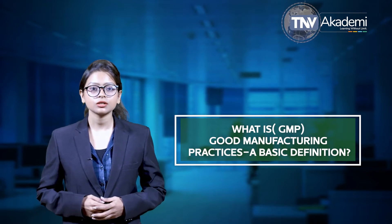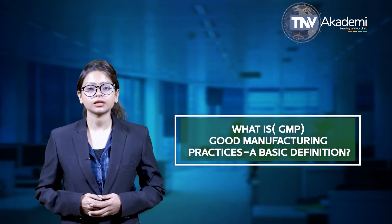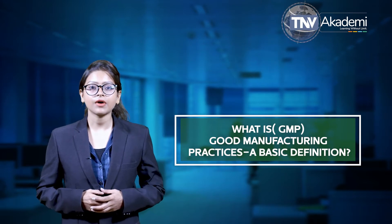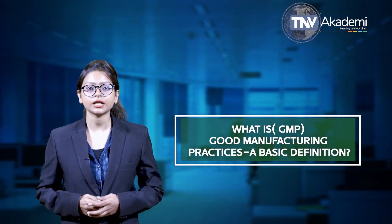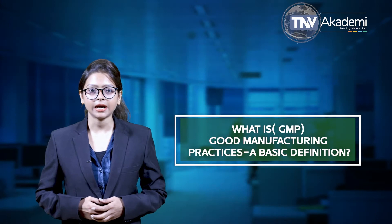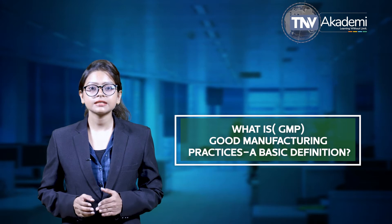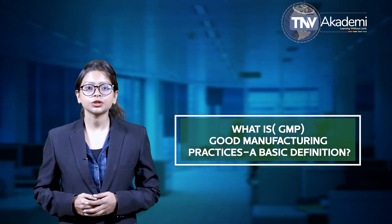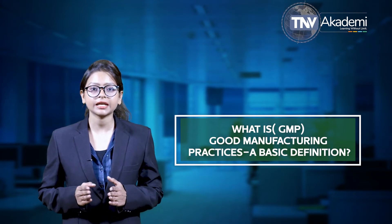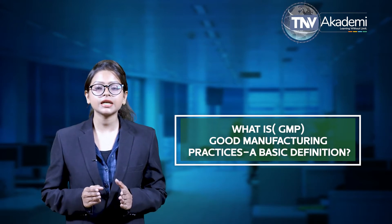Good Manufacturing Practices, or GMP, is a system that consists of processes, procedures, and documentation that ensures manufacturing products such as food, cosmetics, and pharmaceutical goods are consistently produced and controlled according to set quality standards. Implementing GMP can help cut down on losses and waste, avoid recalls, seizures, fines, and jail time, and covers every aspect of the manufacturing process to guard against risks such as cross-contamination, adulteration, and mislabeling.